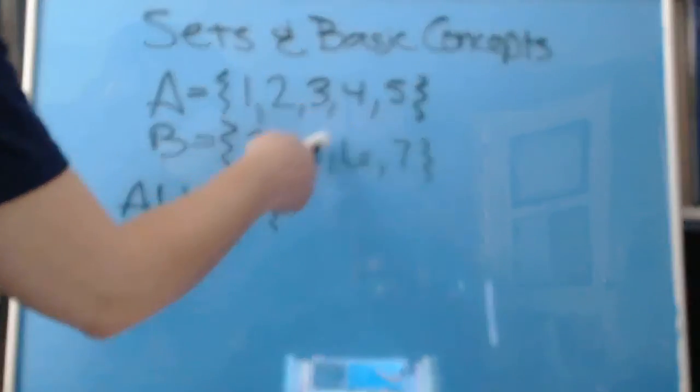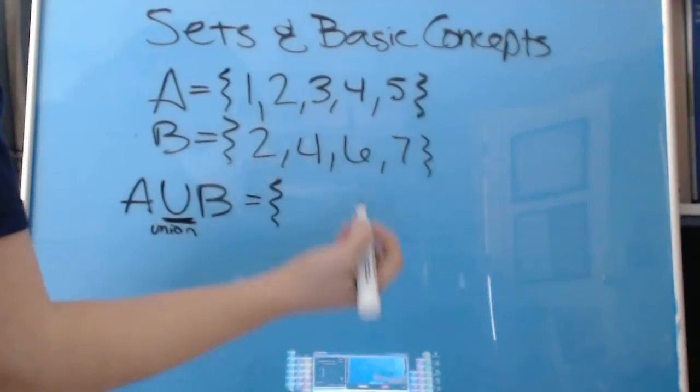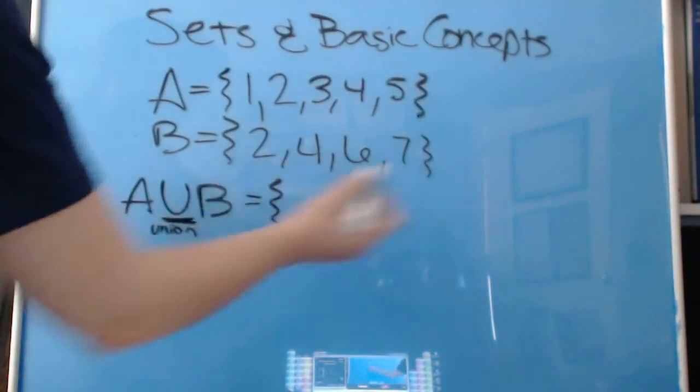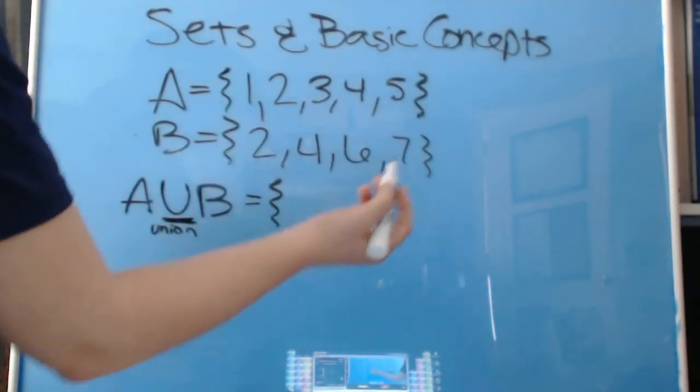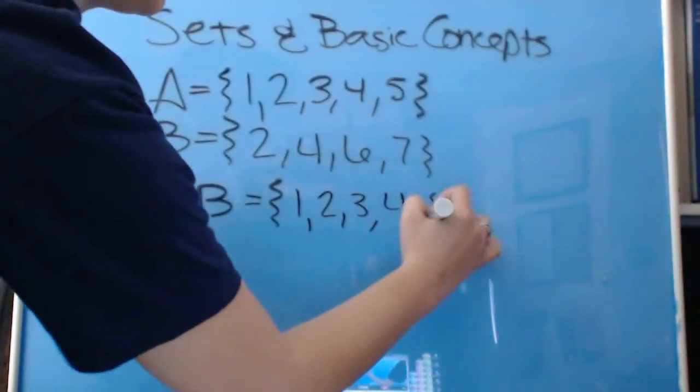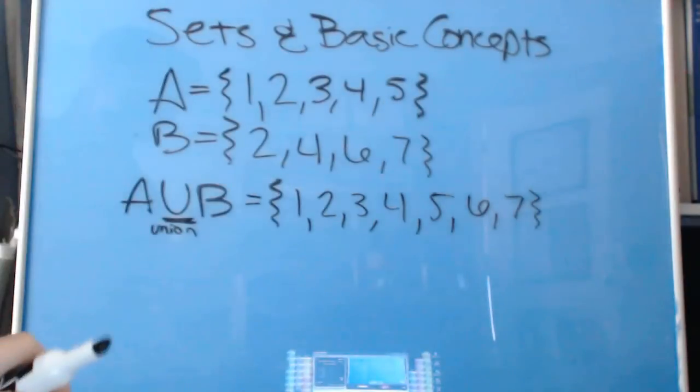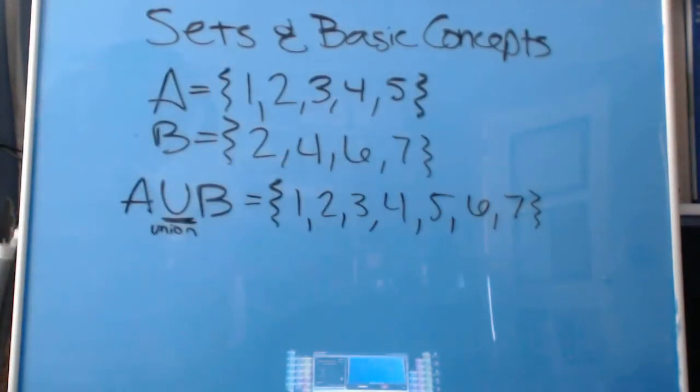Since 2 and the 4 overlap, we don't need to write them twice. It's as many times as, in our case, the number appears. So we've got 1, 2, 3, 4, 5, 6, 7. That is A union B.